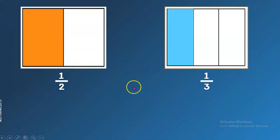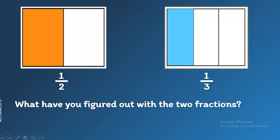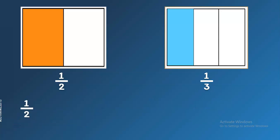And to start, let's look at the two fractions here. Now we have one-half and one-third. What have you figured out with the two fractions? Which is bigger? Yes, you're correct — one-half is bigger than one-third.